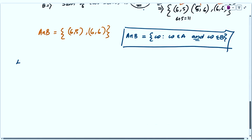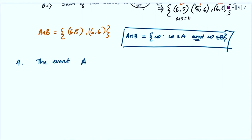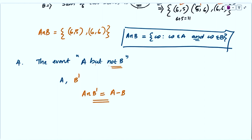The fourth one is the event A but not B. Not B is given as B complement. So A but not B is A intersection B complement, also denoted as A minus B. This is the event A but not B.